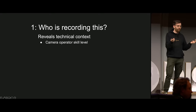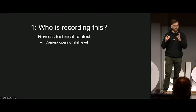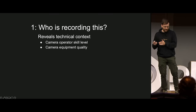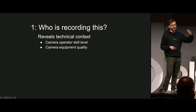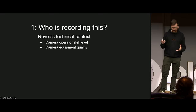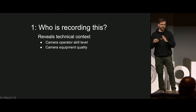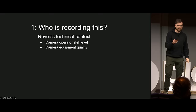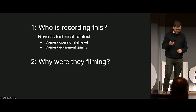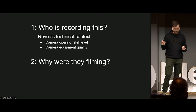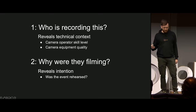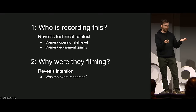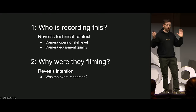What is happening here, quite technically? This will also give you more about the camera equipment quality - if it's an expensive camera, what's the dynamic range, do you have any chromatic aberration? The second question, 'why were they filming,' will reveal intention about your scene - for example, has it happened before, is it something that's been rehearsed, is it a documentary, is it an event that is quite unusual?